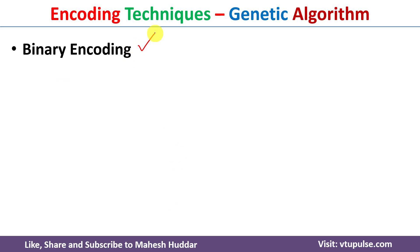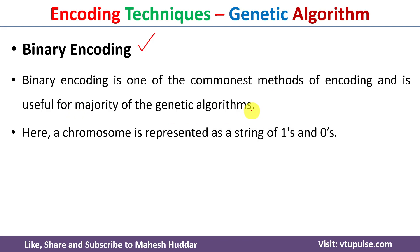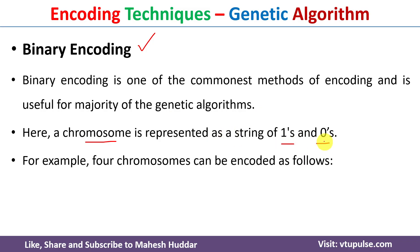Now we will discuss the different encoding techniques. The first encoding technique is binary encoding. Binary encoding is one of the most common methods used in genetic algorithm. It is useful for the majority of genetic algorithm problem definitions. In this case, the chromosome is represented as a string of 1s and 0s. For example, let us assume that there are four chromosomes.